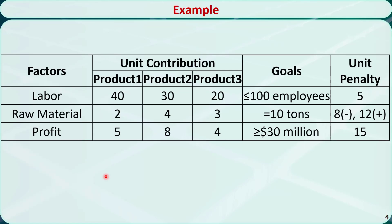Let's see an example. A project manager is trying to determine the quantities of three types of products to produce. Producing one unit of product 1, we need 40 employees and 2 tons of raw material, and it will bring the company $5 million of profit. For product 2, these values are 30, 4, and 8. For product 3, these values are 20, 3, and 4.